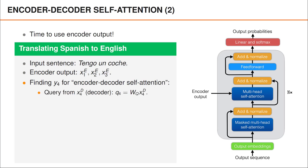This is how an encoder-decoder self-attention layer would do this. It first computes a query vector q4 by multiplying a matrix WQ by x4d, where x4d denotes the fourth vector in the matrix capital XD provided by earlier layers in the decoder — that is, x4d is the current embedding of the fourth word according to the decoder. It then computes key and value vectors for each vector provided by the encoder. Since the encoder output contains three vectors, we compute three key and value vectors, regardless of the number of vectors the decoder has received as input.